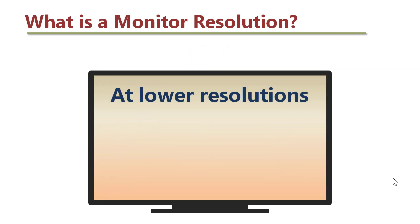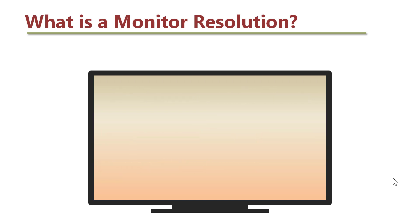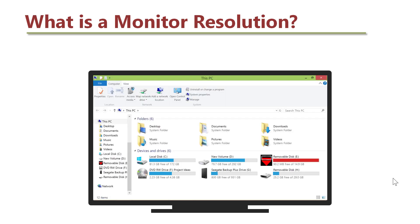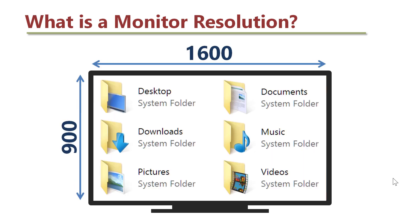At lower resolutions, less content fits on screen and items will be larger. Let's look at an example of a display at 1600 by 900 resolution. Items are fewer and larger.